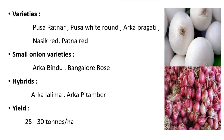Coming on to varieties, the important varieties are Pusa Ratna, Pusa Vaicham, Arka Prakadi, Nasik Red, and Patna Red. For small onion varieties, Arka Bindu and Bangalore Rose are important. The important hybrids are Arka Lalima and Arka Pitambar. The yield you can obtain is 25 to 30 tons per hectare.